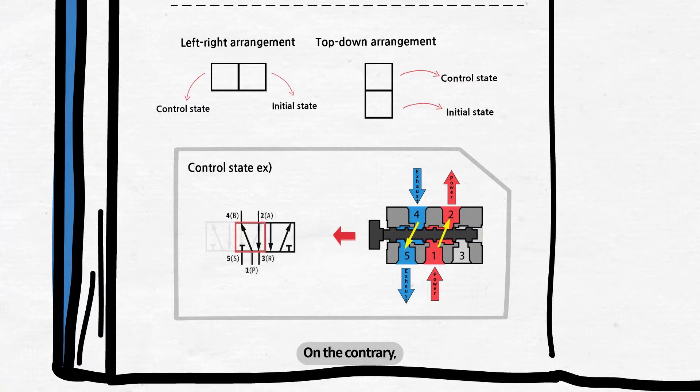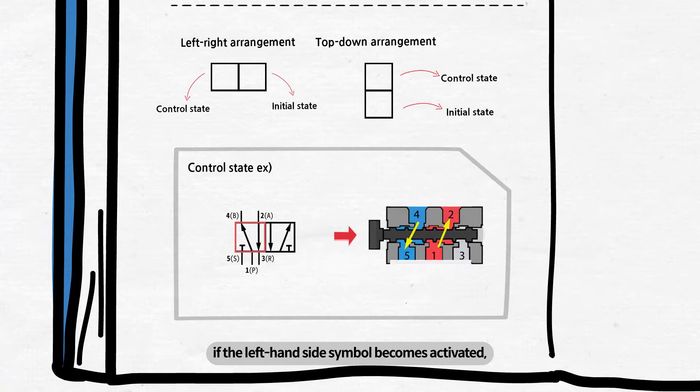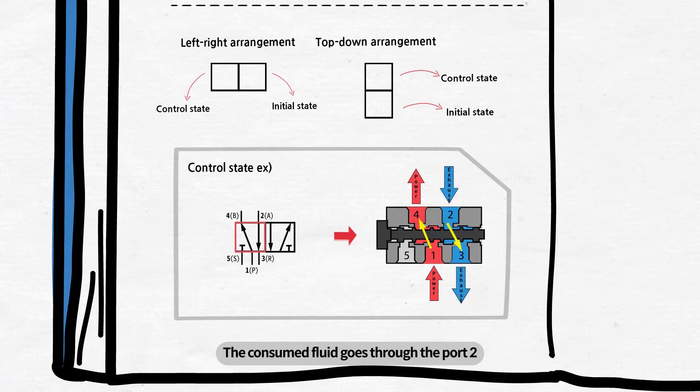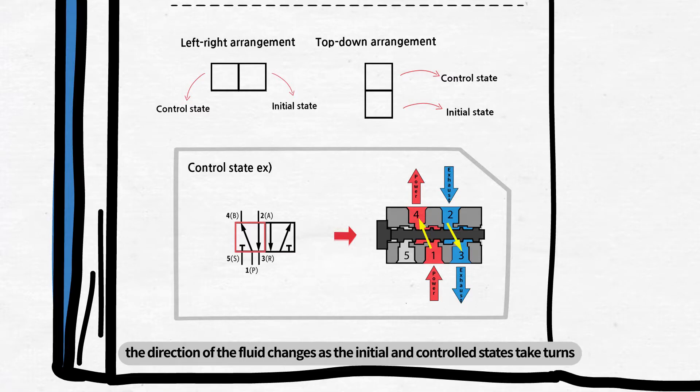On the contrary, if the left-hand side symbol becomes activated, the supply fluid goes through the port 1 to be displayed on the port 4, the consumed fluid goes through the port 2 and is discharged through the port 3, and then the port 5 will become closed circuit. As you can see from these examples, the direction of the fluid changes as the initial and controlled states take turns.